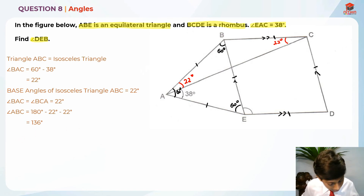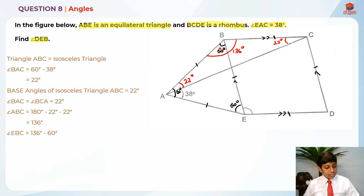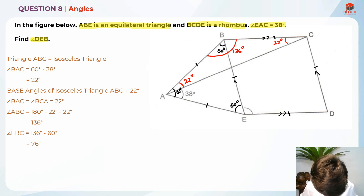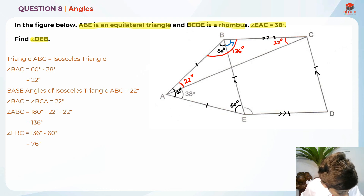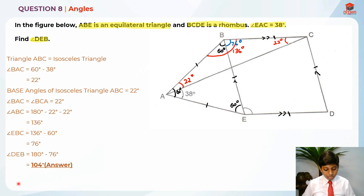So this whole angle ABC is 136 degrees. Now I'm going to find angle EBC, which is this angle here. So 136 minus 60 degrees gives me 76 degrees. This angle is 76 degrees. Now, since interior angles between parallel lines add up to 180 degrees, we can find angle DEB by taking 180 degrees minus 76 degrees, which gives us 104 degrees.